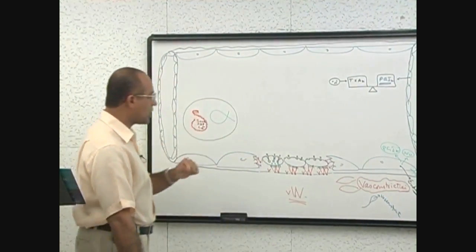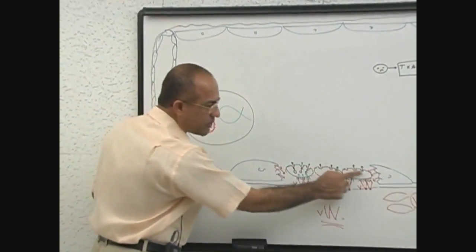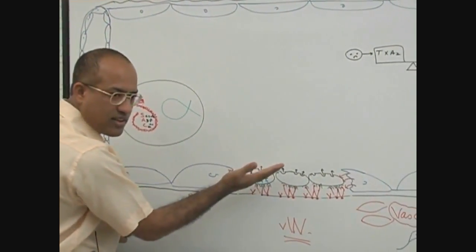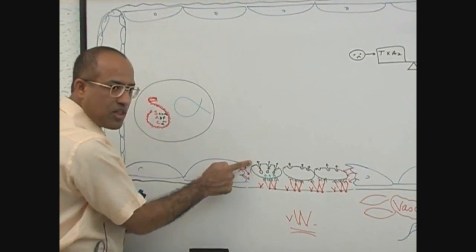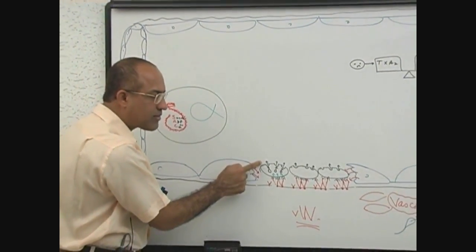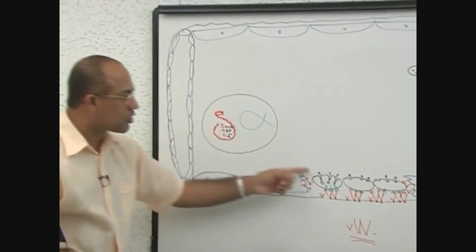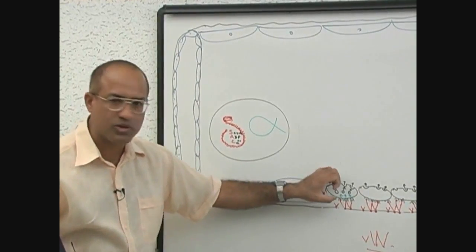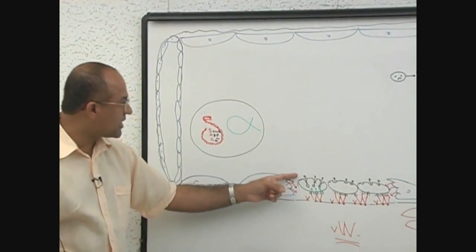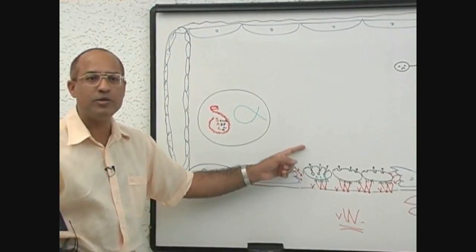Actually these platelets, when they are undergoing release reaction, they produce product from alpha granule as well as product from delta granule. From the delta granule they produce serotonin and that serotonin will produce vasoconstriction. From the delta granule they release ADP.